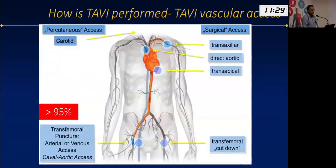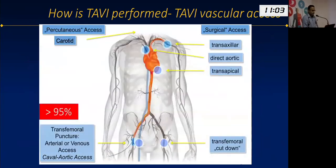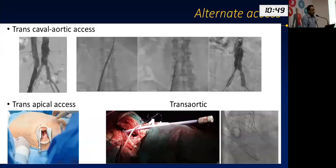In more than 95 percent of patients, TAVI is a truly percutaneous procedure requiring no surgical cut down. It is usually done through transfemoral access — accessing the femoral artery. In some patients with a hostile femoral artery due to heavy calcification or tortuosity, alternative access routes are used, such as transapical, transaortic, transcarotid, or subclavian. We have also attempted transcaval aortic access — creating a communication between the IVC and the aorta and deploying the valve through that route.